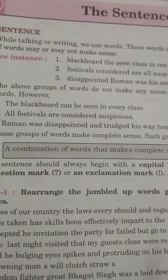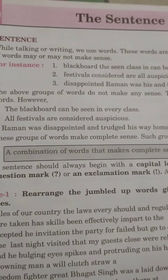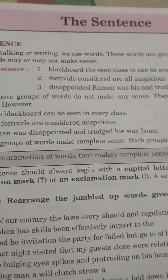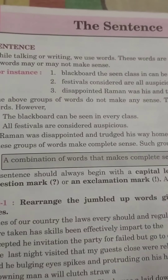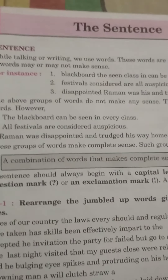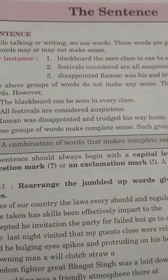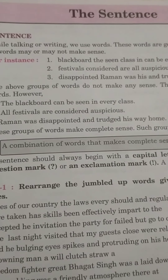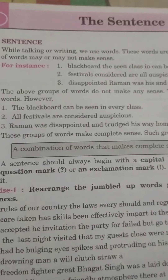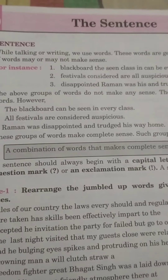Combination means a group coming together. A sentence contains a subject, a verb, and an object. Subject means a noun or pronoun, verb means an action word, and an object means any person, thing or place. For example: 'Prashant is running on the ground.'